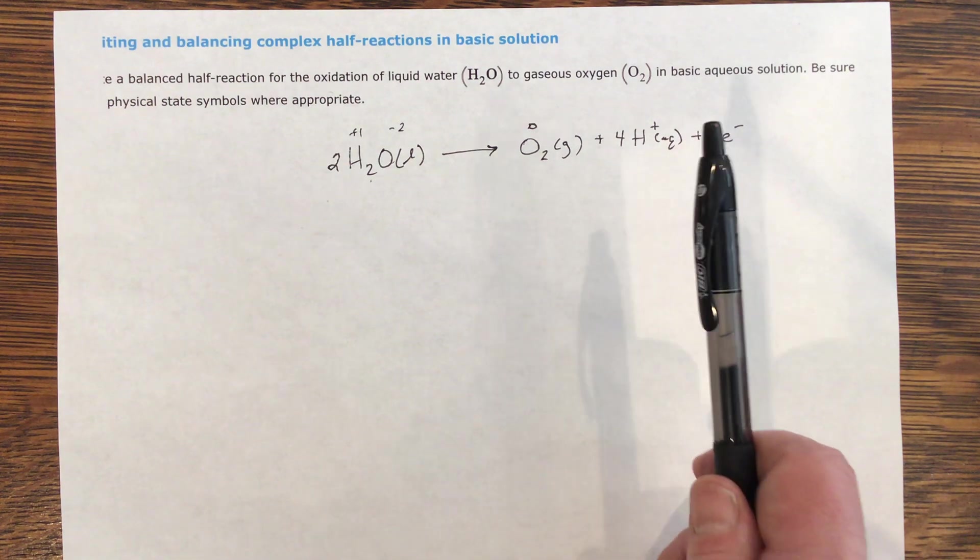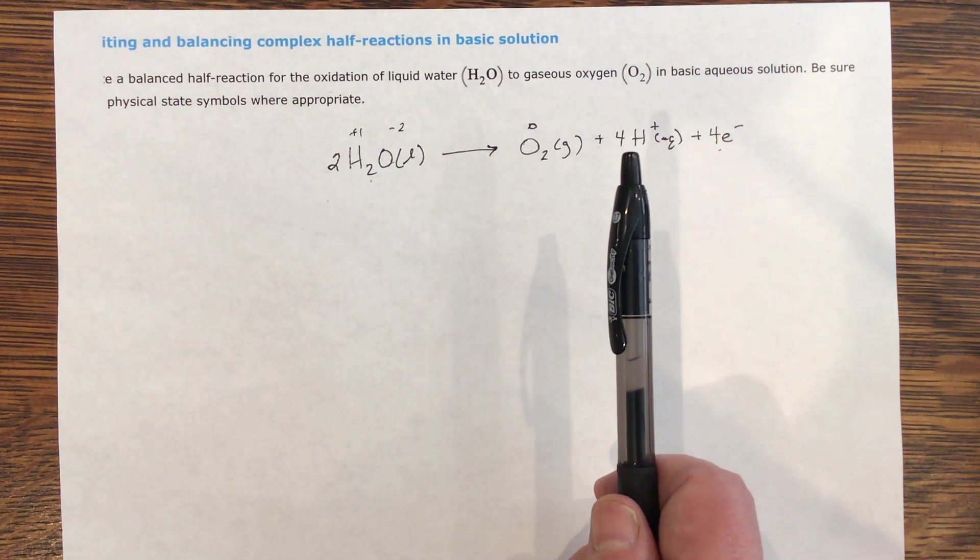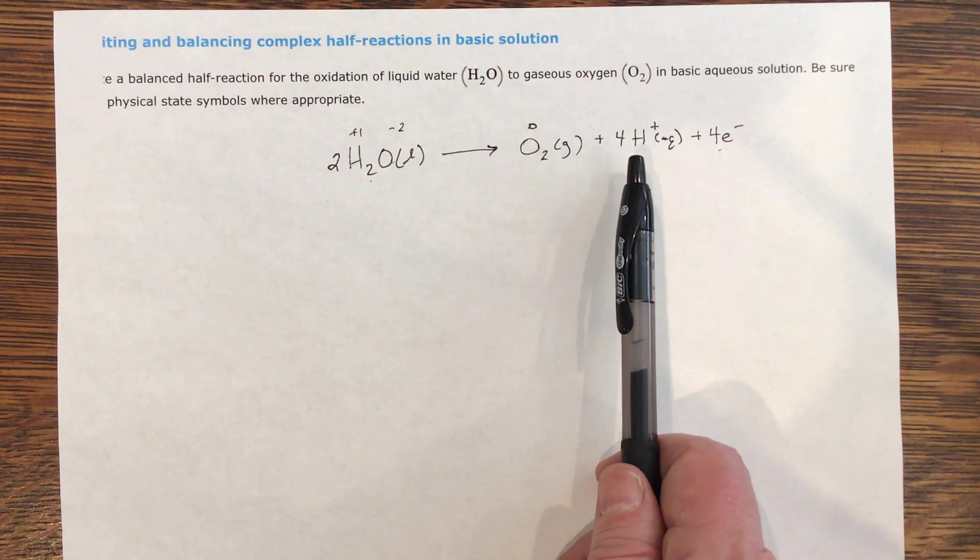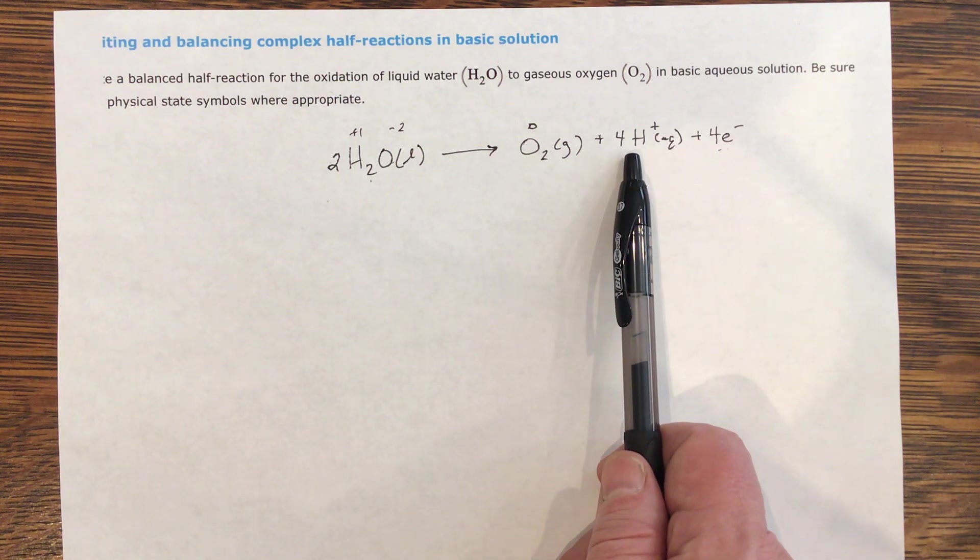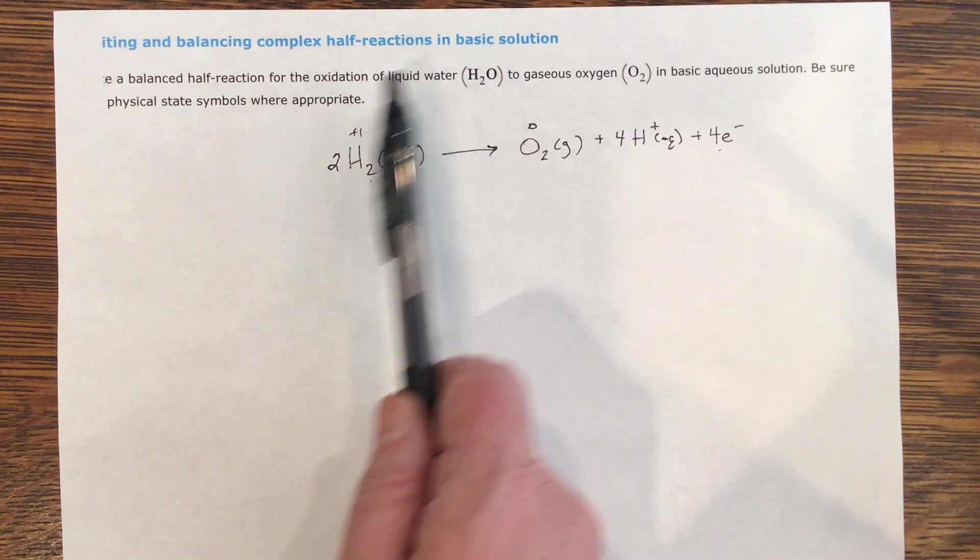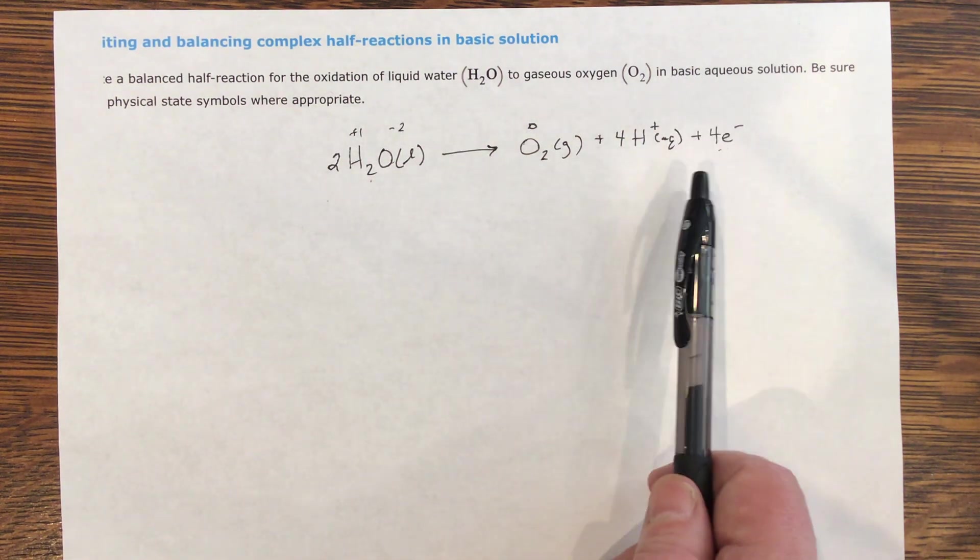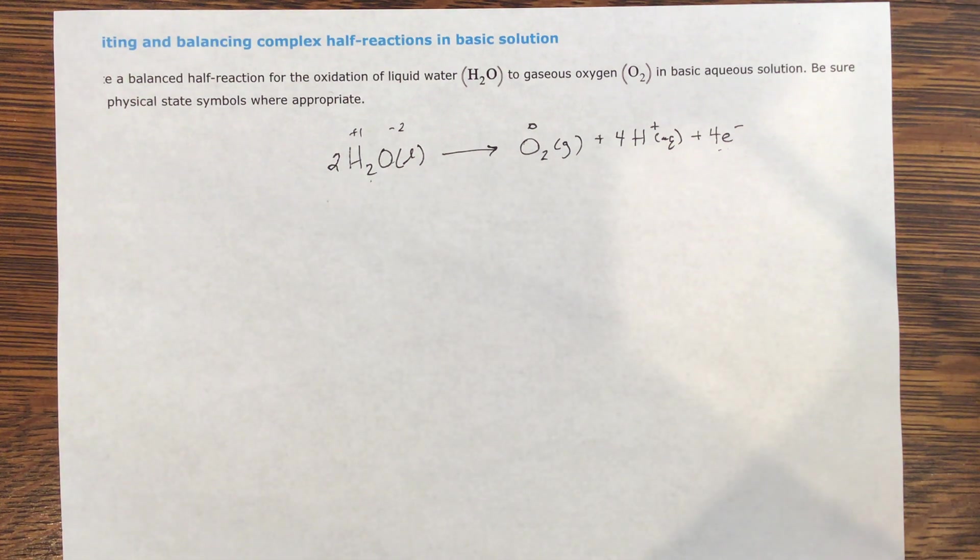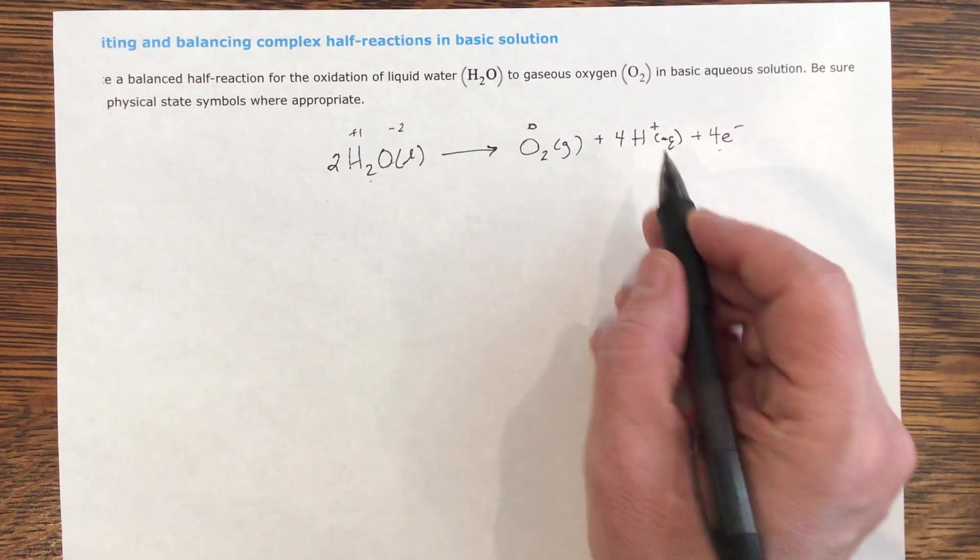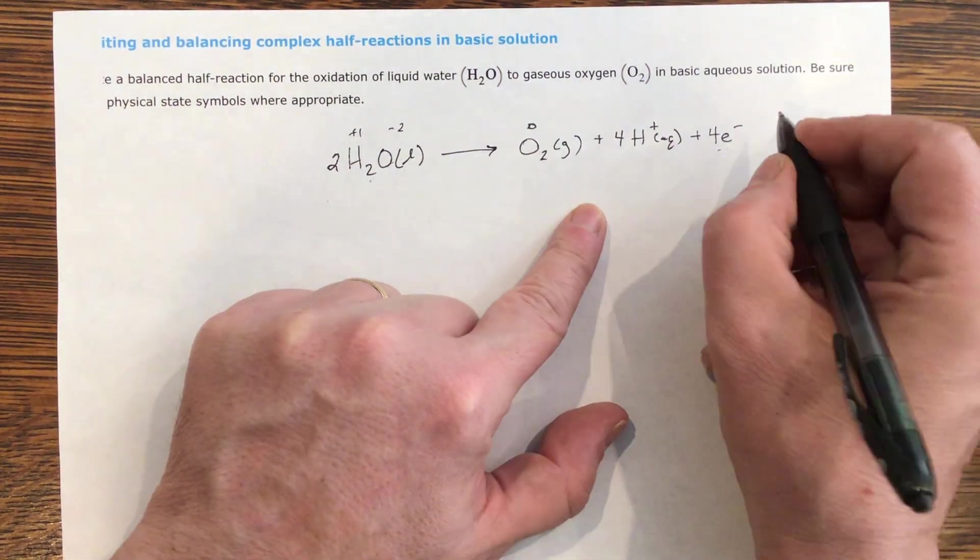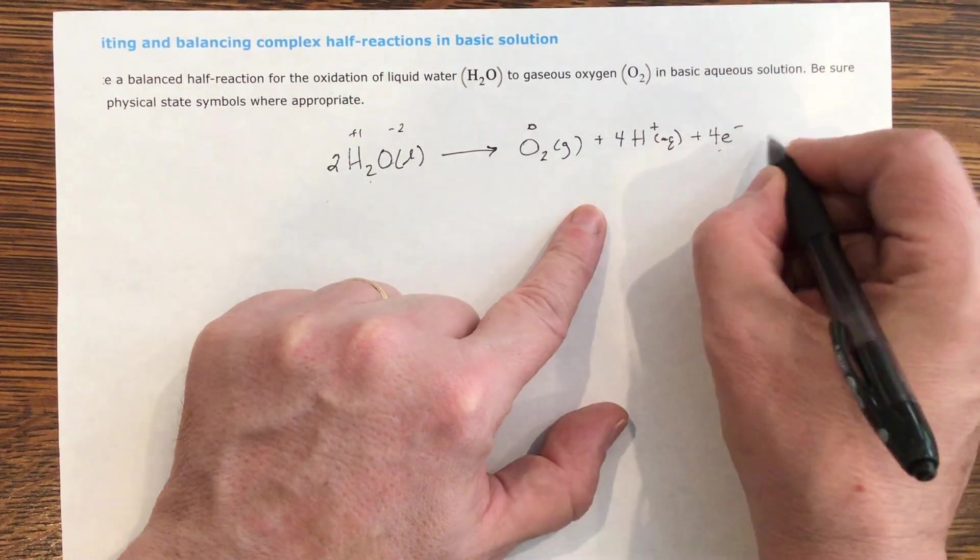So let's look now at protons. In order to take this, which is acidic, into basic solution, because that's what they want, we want it to be in basic aqueous solution, I have to cancel these acids. The protons are acidic, so as of now, if they asked for acid solution, you'd be finished. This would be your answer. But since they ask for basic solution, I have to neutralize this acid, and I do that with hydroxides. So I have four to get rid of, so I'm going to add four hydroxides on both sides.